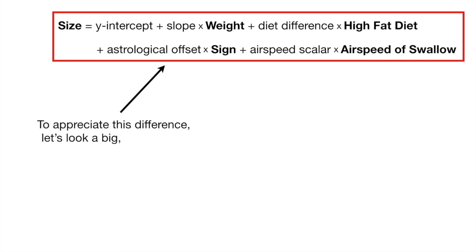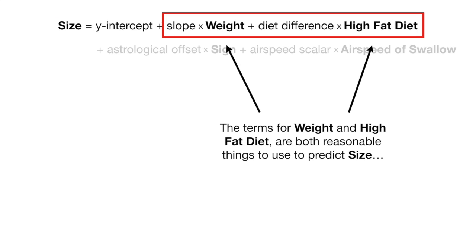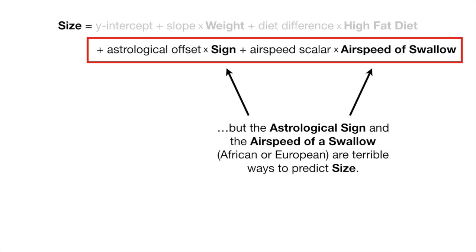To appreciate this difference, let's look at a big, huge, crazy equation. The goal of this equation is to predict size. The terms for weight and high fat diet are both reasonable things to use to predict size. But the astrological sign and the airspeed of a swallow, African or European, are terrible ways to predict size.